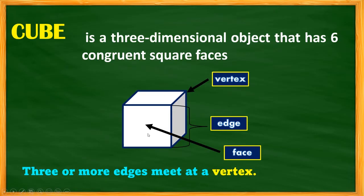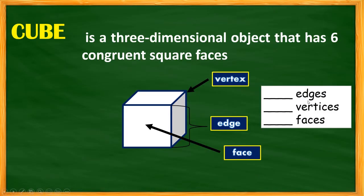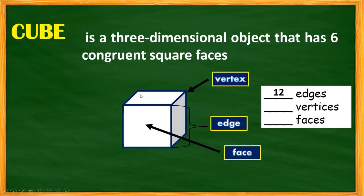Now let's look at the properties of the cube. How many edges does a cube have? Counting: 1, 2, 3, 4, 5, 6, 7, 8, 9, 10, 11, 12 — so the cube has 12 edges. How many vertices? Counting: 1, 2, 3, 4, 5, 6, 7, 8 — so the cube has 8 vertices. And the cube has 6 faces.